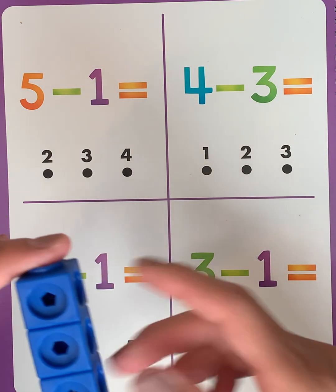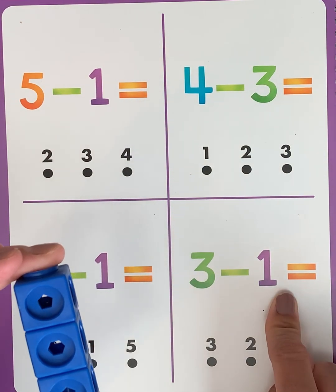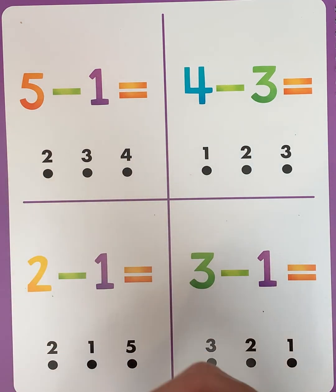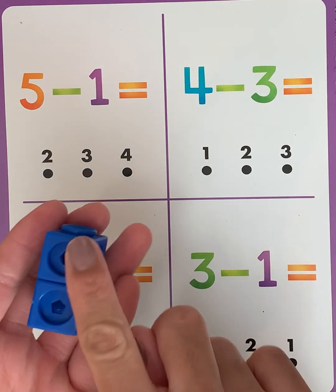And let's see what that equals. 3 minus 1. So 1, 2, 3 minus 1. We want to take away 1. We are left with 1, 2.